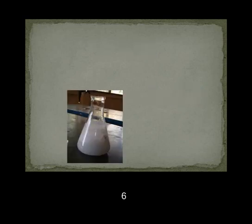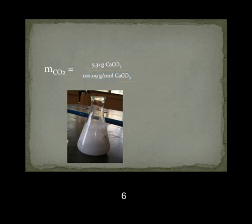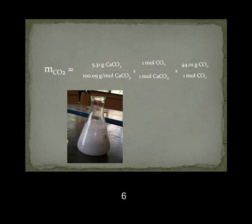Now we can assume that calcium carbonate is completely consumed, and follow the same process to determine the mass of carbon dioxide produced by 5.31 grams of calcium carbonate. We divide the starting mass of calcium carbonate by its molar mass to find the number of moles of calcium carbonate, then multiply by the mole-to-mole ratio of carbon dioxide and calcium carbonate to find the number of moles of carbon dioxide. Finally, multiply by the molar mass of carbon dioxide to find that 2.34 grams of carbon dioxide is produced.